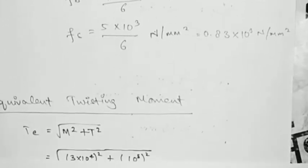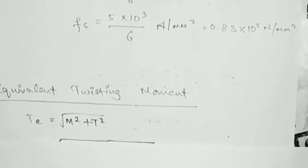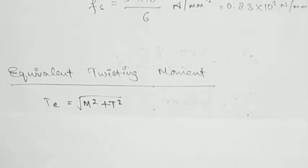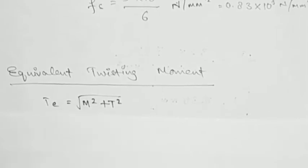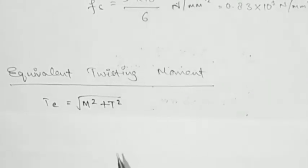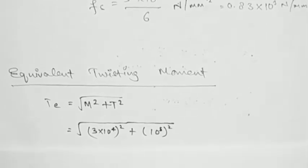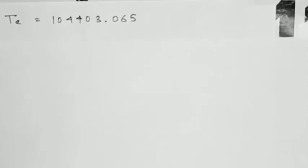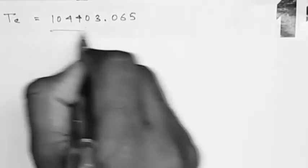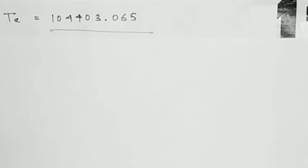Now we'll use the formula for equivalent twisting moment: T_E = √(M² + T²). We are calculating the equivalent twisting moment because both twisting moment and bending moment are applied. Putting in the values of M and T, T_E comes out to be 104403.065 N·mm.